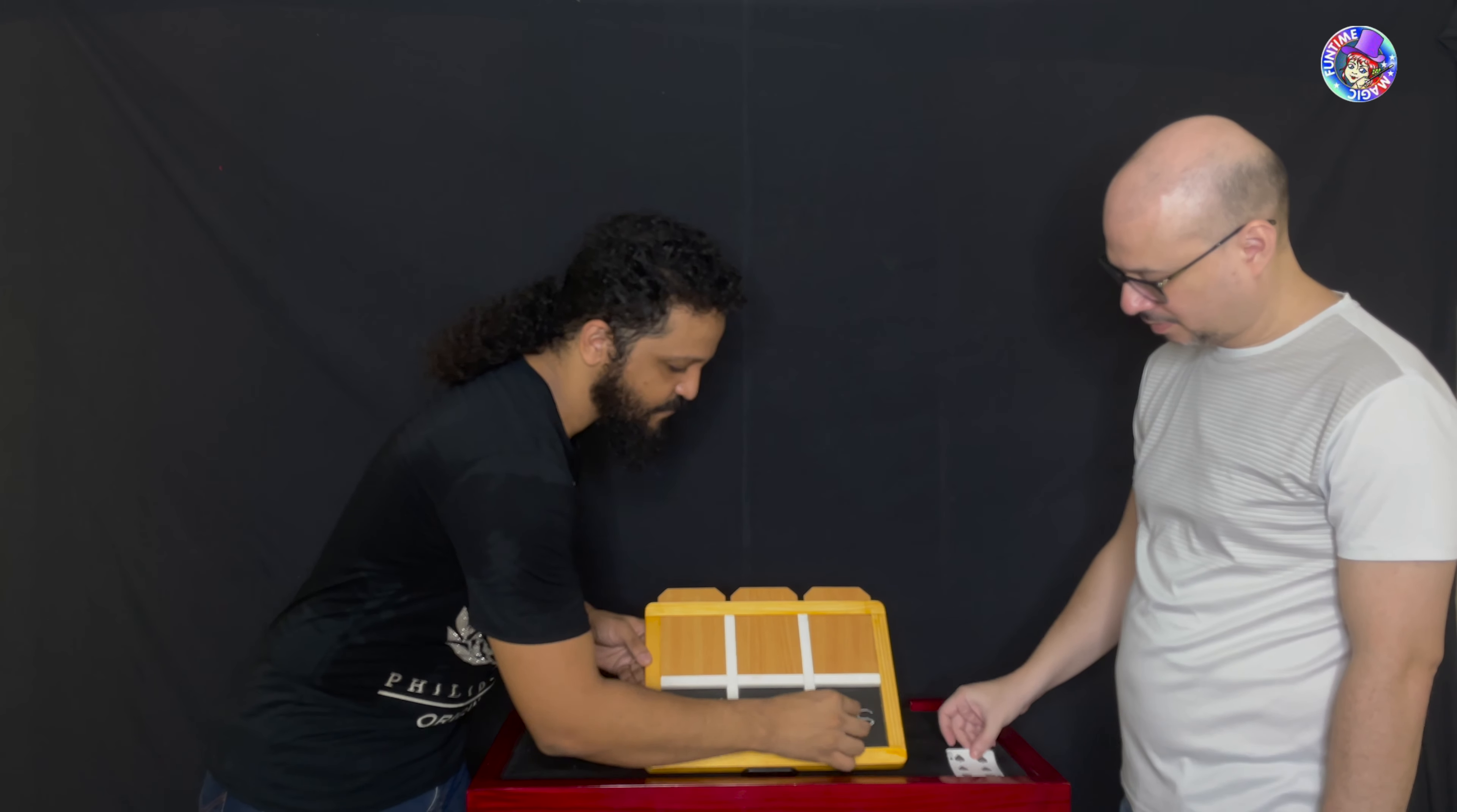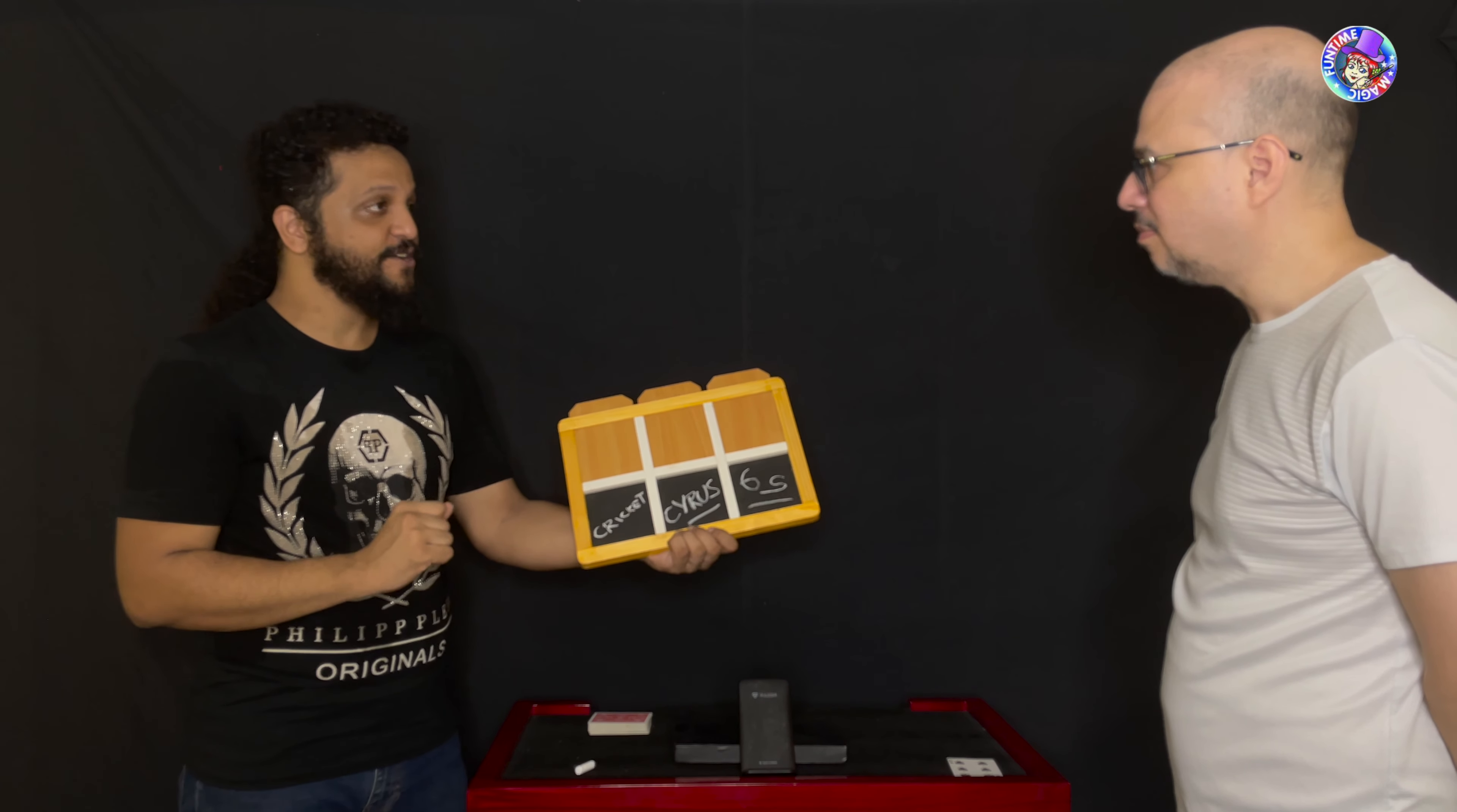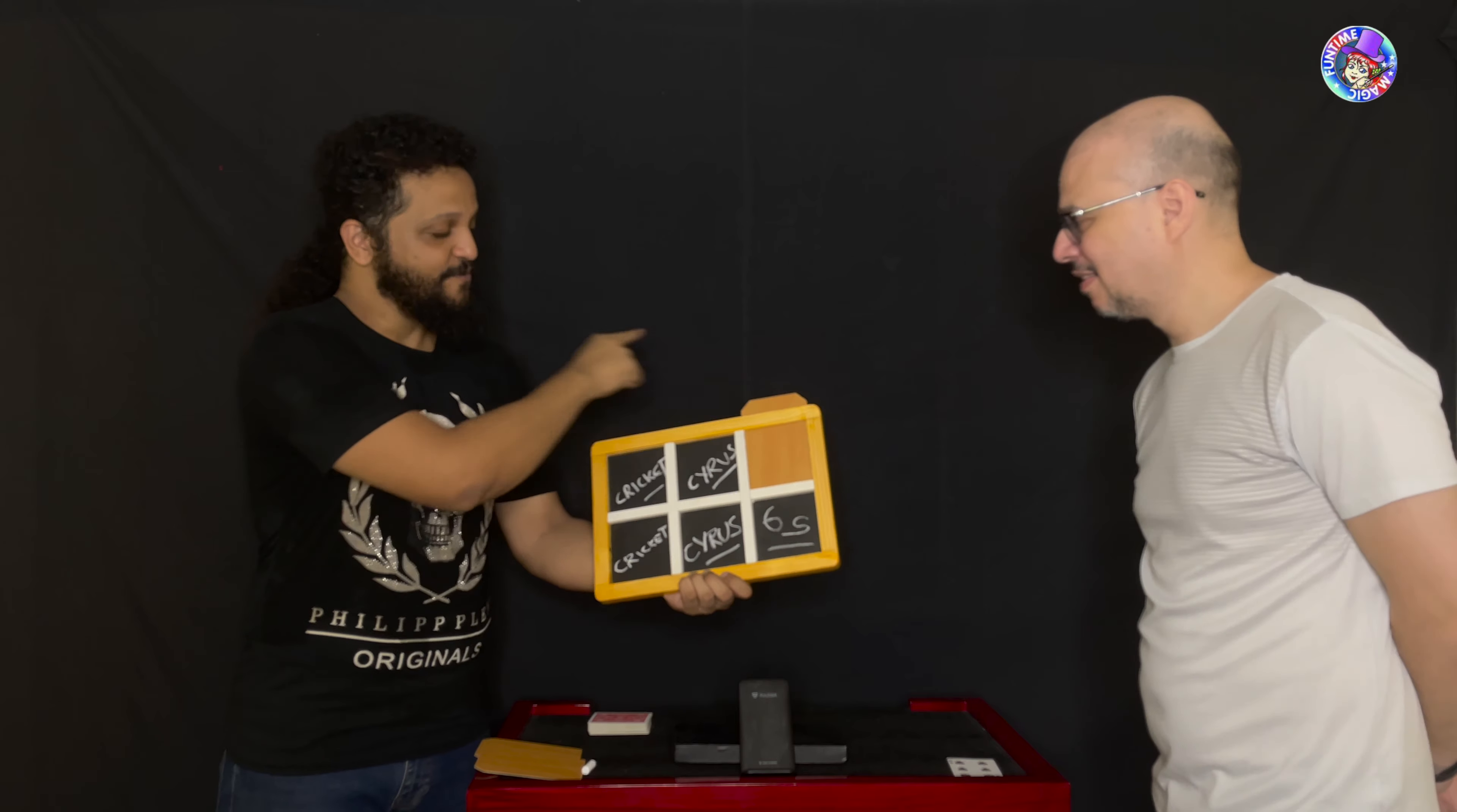So before you even mentioned any of these, I made a prediction. All right, so now we're going to check. Your childhood hobby was playing cricket, right? Cricket with your brother Cyrus. And last but not least, the random card. You could have picked any card, you picked the six of spades. Go ahead, remove that panel and have a look. And that is the six of spades!